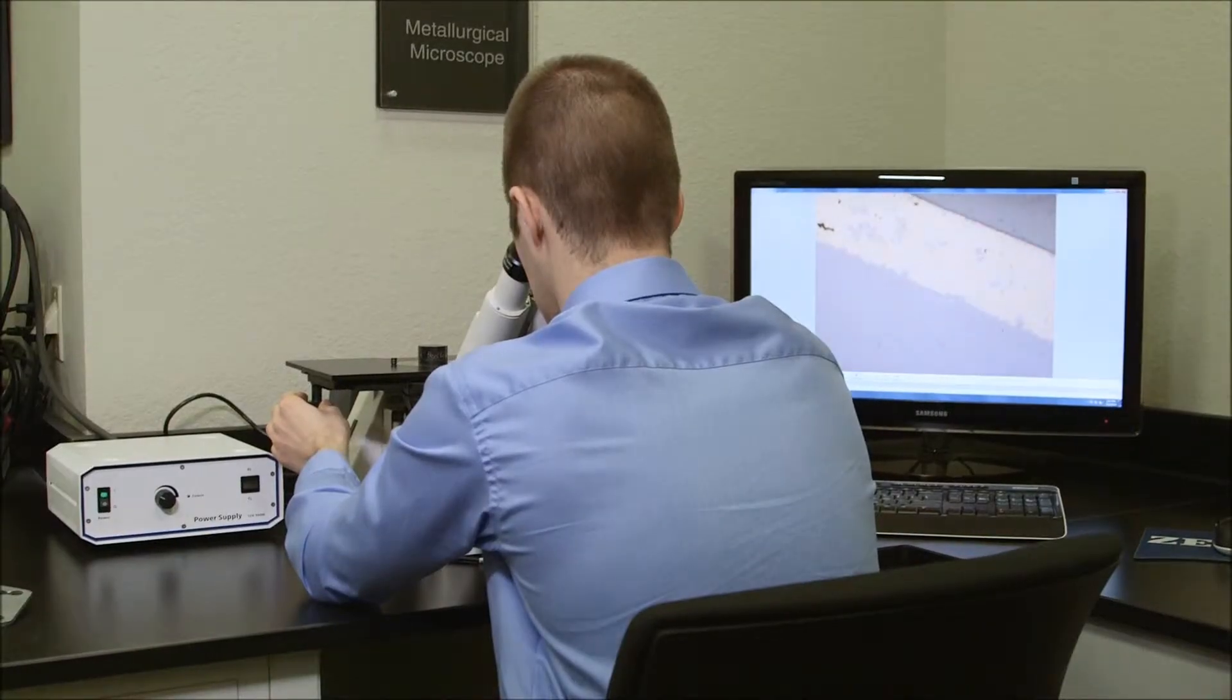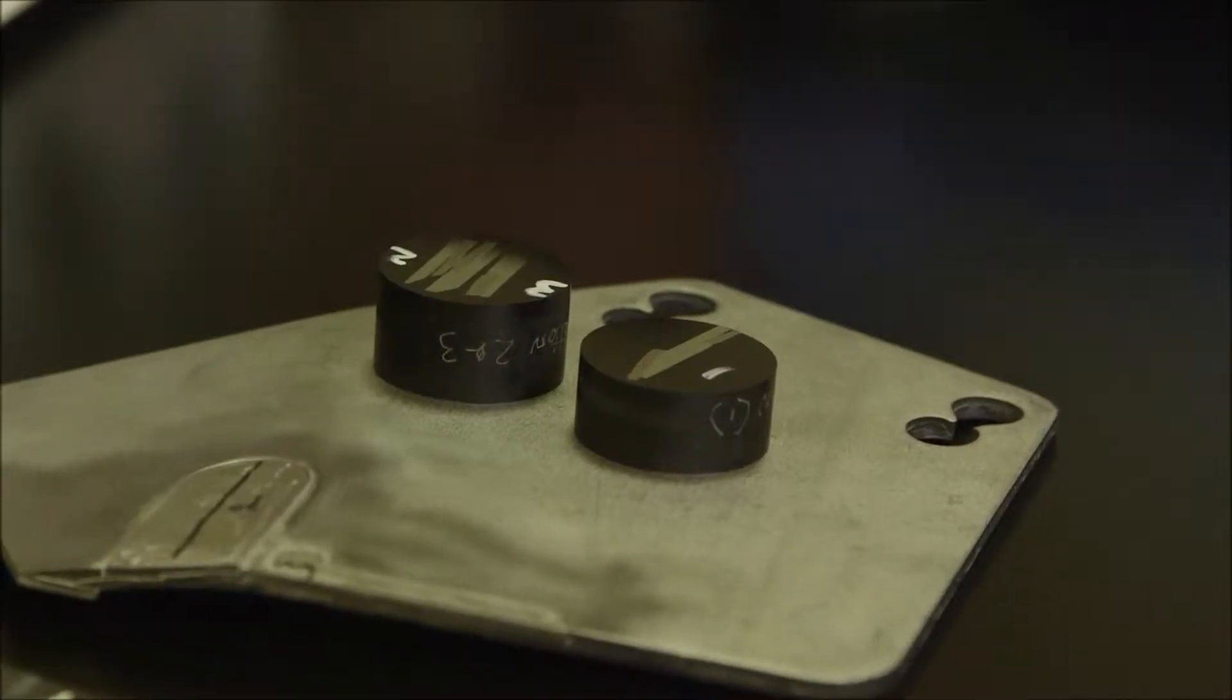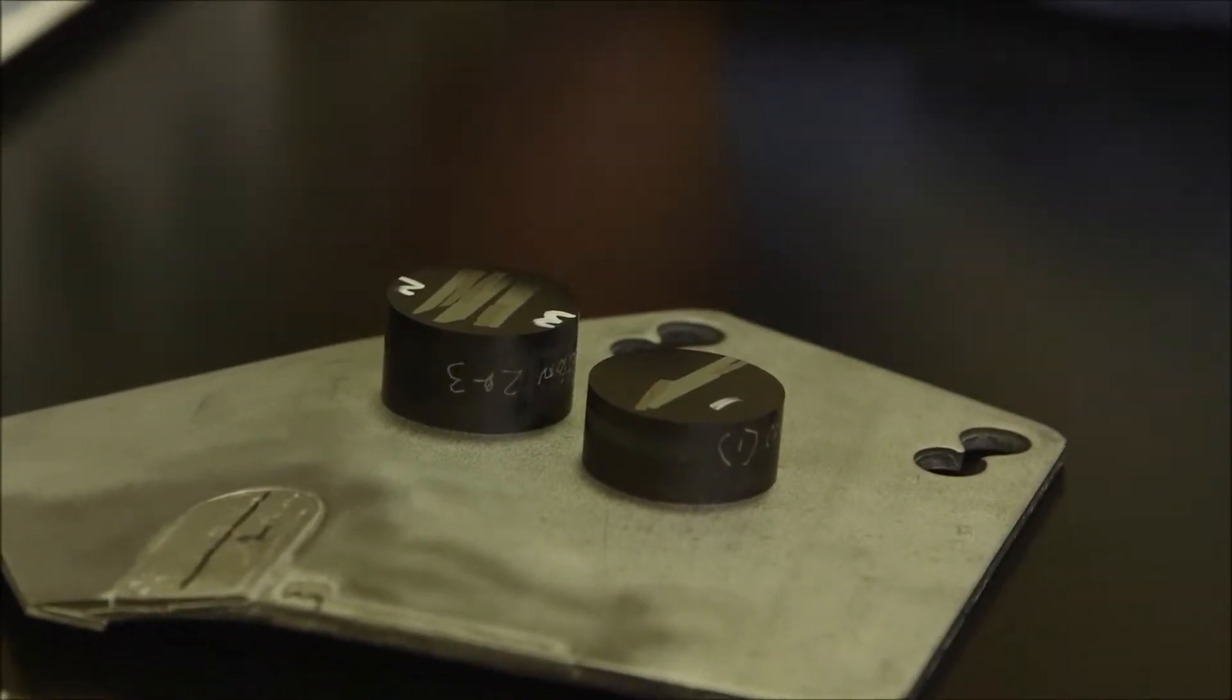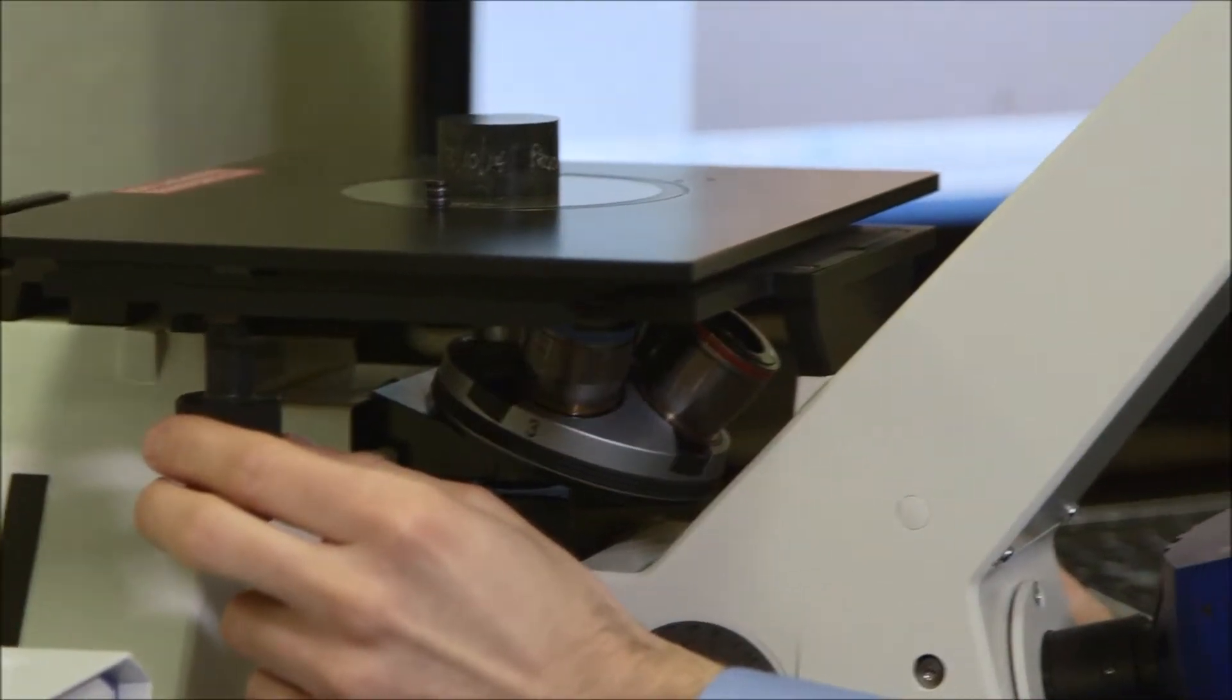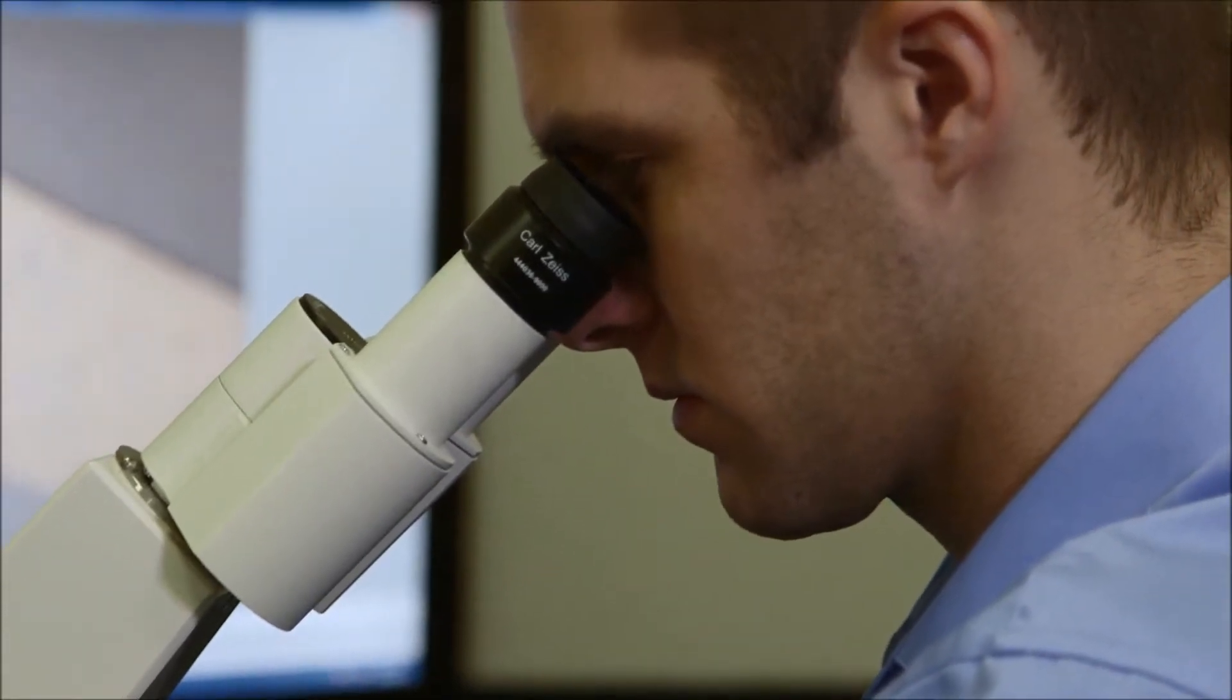Another very important part of metallurgical analysis is the analysis that we do on microstructures. And in order to do this, we use a Zeiss Axiovert 40 microscope that's used to look at mounted and polished specimens. And what we can do in our mechanical testing room is we can actually prepare specimens to a mirror finish, we can etch them, and then we can look at the revealing microstructure underneath our inverted metallograph microscope that we have.